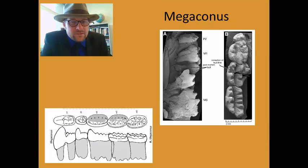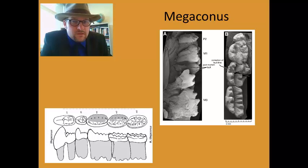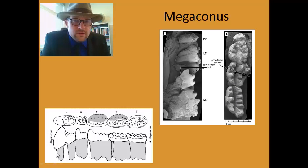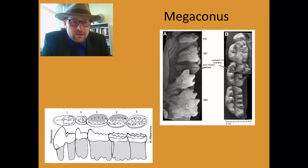Megaconus has lots of cusps on its teeth. These are the upper teeth from that skeleton, a nice SEM scan, and you can see lots of little tubercles on these teeth. And in fact, in the lower teeth of Megaconus, you see that the premolar, this premolar down here, is enlarged with sort of a blade-like thing.